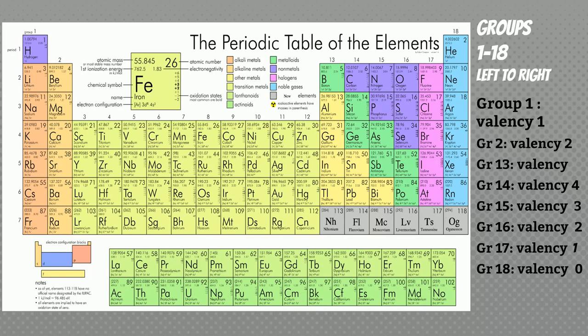Group 2 elements need to lose 2 electrons to gain stability. In the middle, they are called D-block elements — we will discuss about them later. Group 13 elements have 3 electrons in the outermost shell, so they are ready to lose 3 electrons, that's why valence is 3.